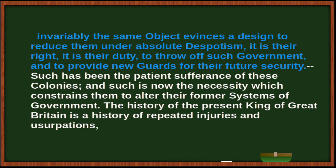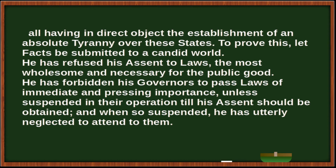The history of the present King of Great Britain is a history of repeated injuries and usurpations, all having, in direct object, the establishment of an absolute tyranny over these states. To prove this, let facts be submitted to a candid world. He has refused to assent to laws, the most wholesome and necessary for the public good.